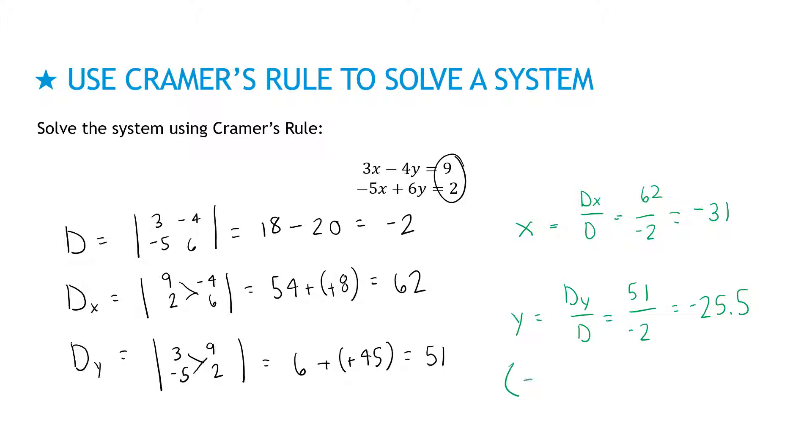So my final solution, oops, negative 31, comma, negative 25.5. If you're ever unsure, like we have a decimal and we have numbers that are very large, remember, I can always take the X and Y and plug it back into either equation or both equations to make sure they work. Or I can get my Desmos graphing calculator out, graph those two, and make sure that they do in fact cross at negative 31, comma, negative 25.5.